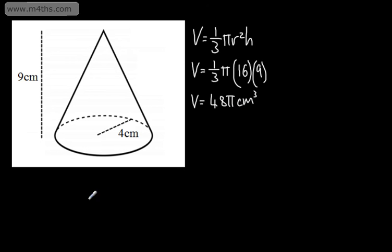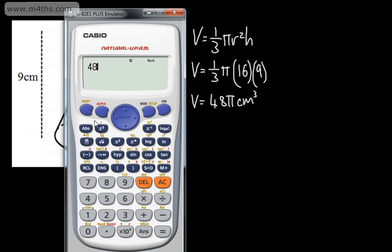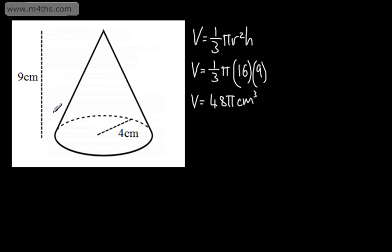If we wanted to see what this looks like as a decimal, we do 48, then hit shift and pi, and that gives us about 151 centimeters cubed. Or you could say it's 150.8 centimeters cubed, correct to one decimal place. So nice and straightforward when we have the perpendicular height and the base radius.